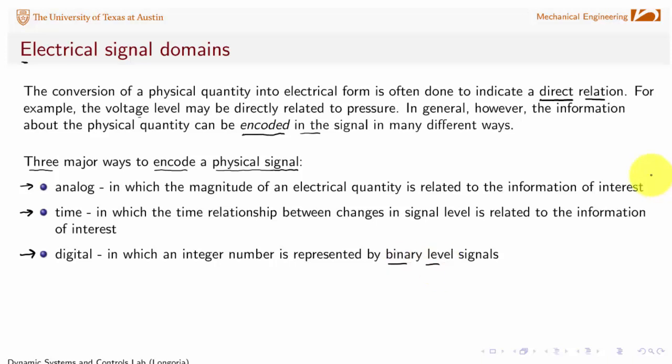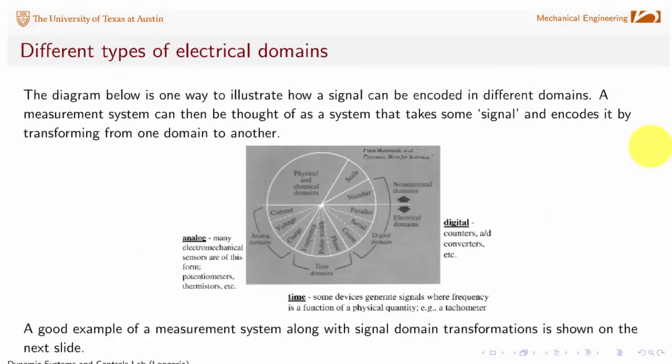Most of the sensors that we use in this course, just because of their ease of measurement as analog voltage quantities, will be analog form. But if you look at other sensors, for example, encoders that are very simple sensors, yet they're in digital form, and also we usually are extracting time-based information from them. So keep that in mind whenever you're looking at sensors for different applications in the future.